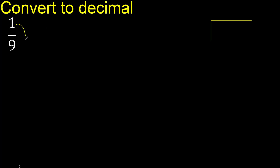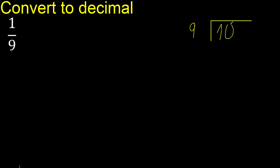1 divided by 9. 1 is less than 9, therefore complete — always complete with 0 here.